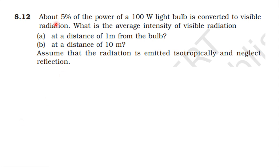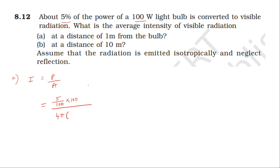Question: About five percent of the power of a 100-watt light bulb is converted to visible radiation. What is the average intensity of the visible radiation at a distance of 1 meter? Using intensity I = Power / Area: power = 5% of 100W = 5W, area = 4πr² = 4π(1)². So I = 5 / (4π) ≈ 0.4 W/m².